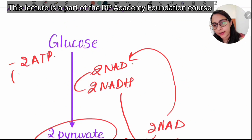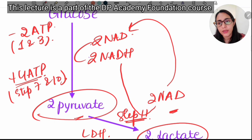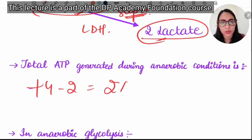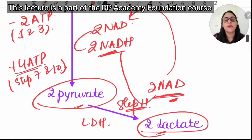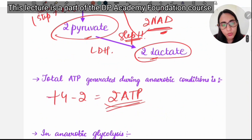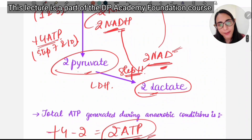In anaerobic glycolysis: we use 2 ATP (steps 1 and 3) and generate 4 ATP (steps 7 and 10), giving a net of only 2 ATP. The 5 ATP that would come from NADH in aerobic glycolysis are not generated, because step 11 consumes the NADH. Total ATP in anaerobic glycolysis is only 2 ATP.